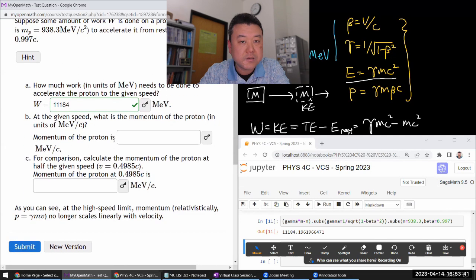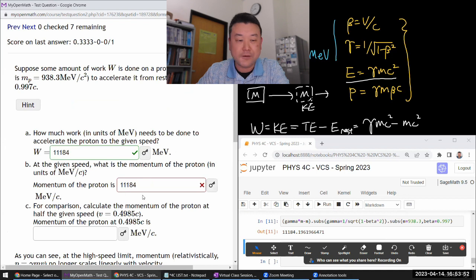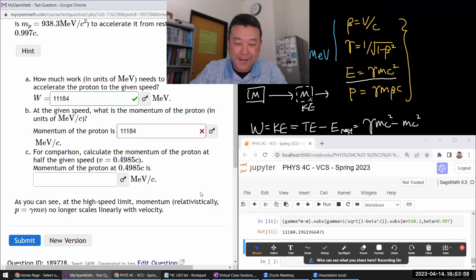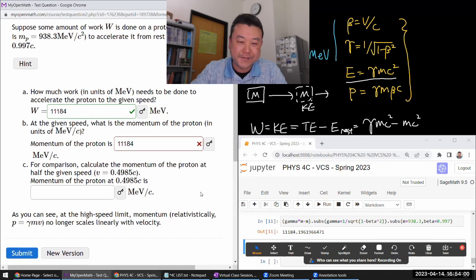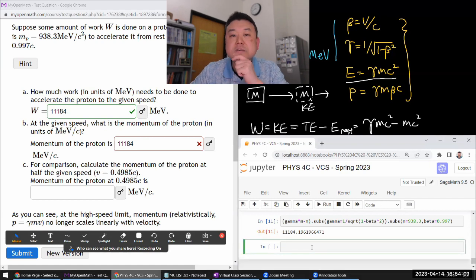At the given speed, what is the momentum of the proton in units? You know what? I think we might be in the ultra-relativistic limit. I might be able to just put this in, and it might say it's correct. All right. It's not. So let's actually calculate what the correct relativistic momentum is.